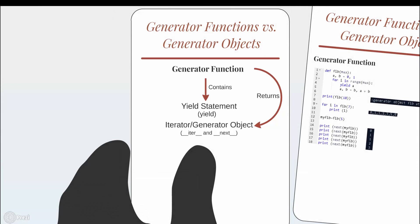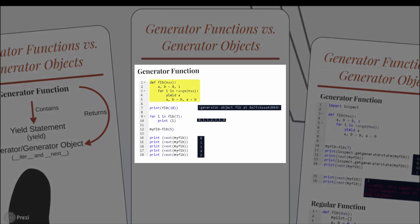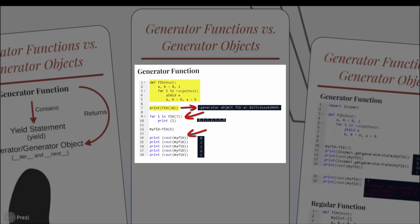Let's see an example to understand generator functions and generator objects. In this example, I have created a generator function which returns the Fibonacci sequence. A Fibonacci sequence is a sequence of numbers in which each number is the sum of the two numbers before it. In main, when I call the generator function like a regular function, it doesn't return the Fibonacci sequence, but a generator object. A generator object can be used in a for loop or with the built-in function next(), as shown in these examples.